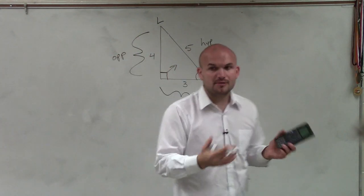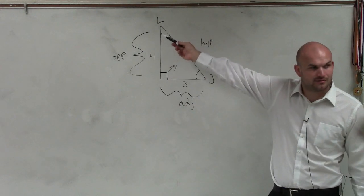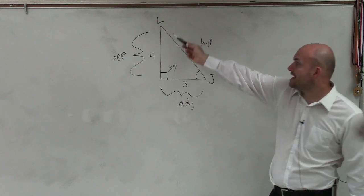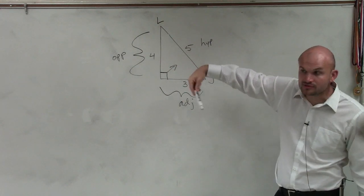Now remember, that's going to be different when you had to do this for L. If you had to do the sine, cosine, tangent for L, because with L, that would be adjacent and that would be opposite. So it does change.